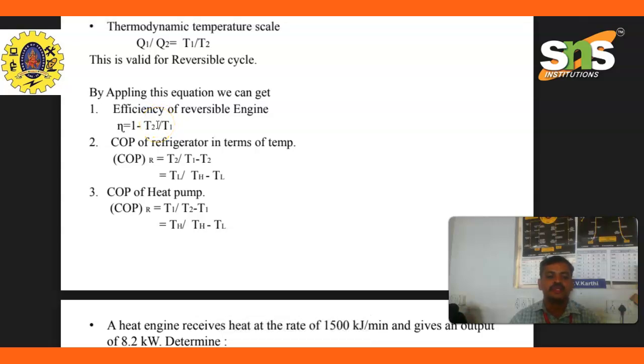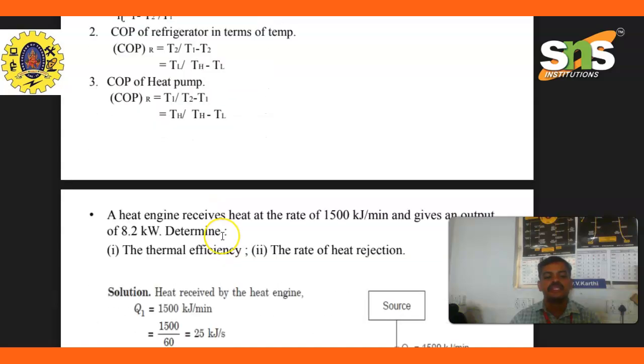The coefficient of performance (COP) of refrigerators in terms of temperature: T2 divided by T1 minus T2, or TL divided by TH minus TL. For the heat pump: T1 divided by T1 minus T2, or TH divided by TH minus TL.